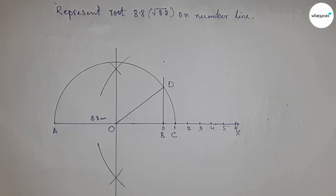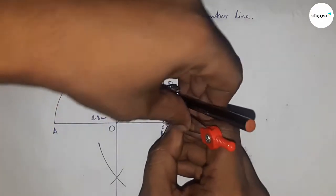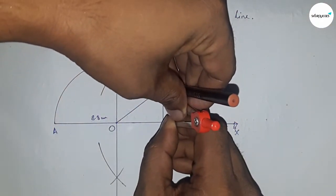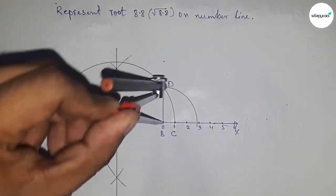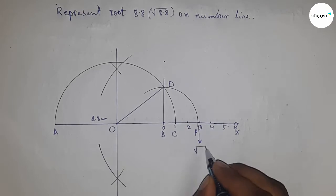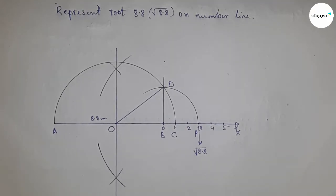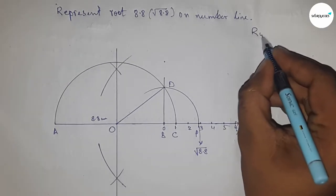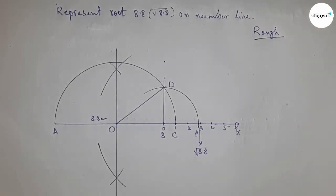Now take the distance BD with a scale and draw an arc which meets the number line at point P. This is the representation of root 8.8 on the number line. Now let's discuss the calculation.